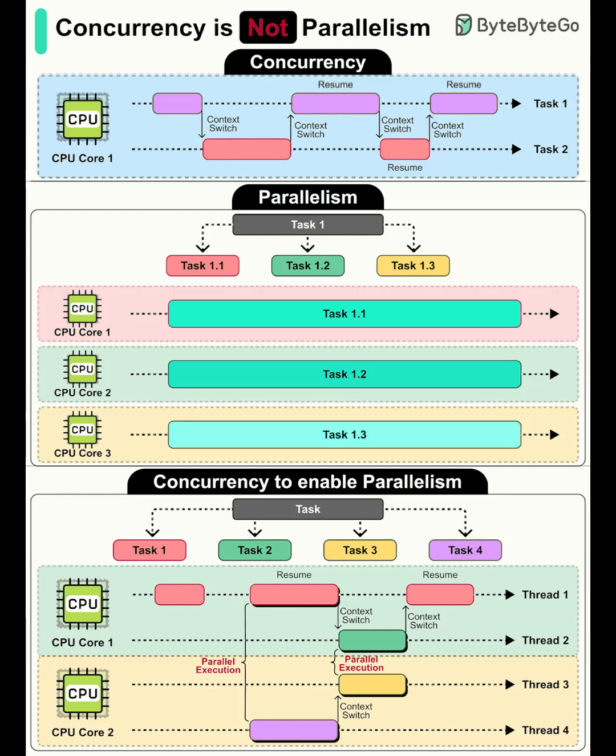Why is that useful? Concurrency shines when tasks spend time waiting — like reading files, calling APIs, or talking to databases. While one task is waiting for I/O, another task can run. Instead of wasting time during those waits, the system keeps other work moving. The result is better responsiveness and higher throughput without necessarily adding more cores.